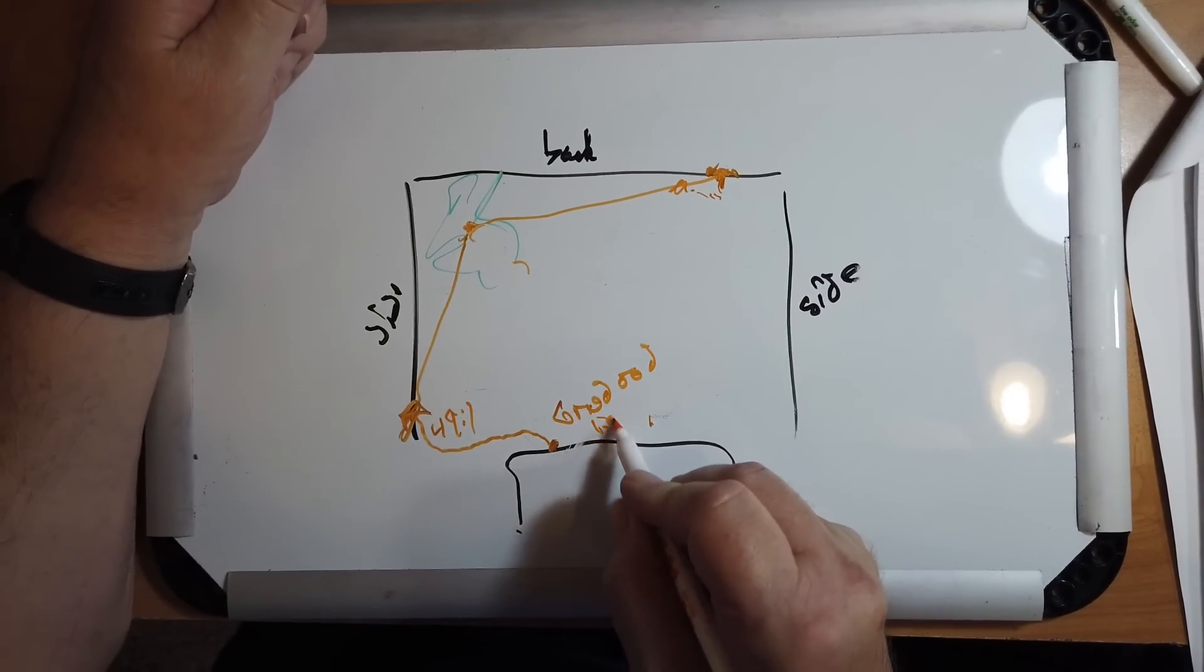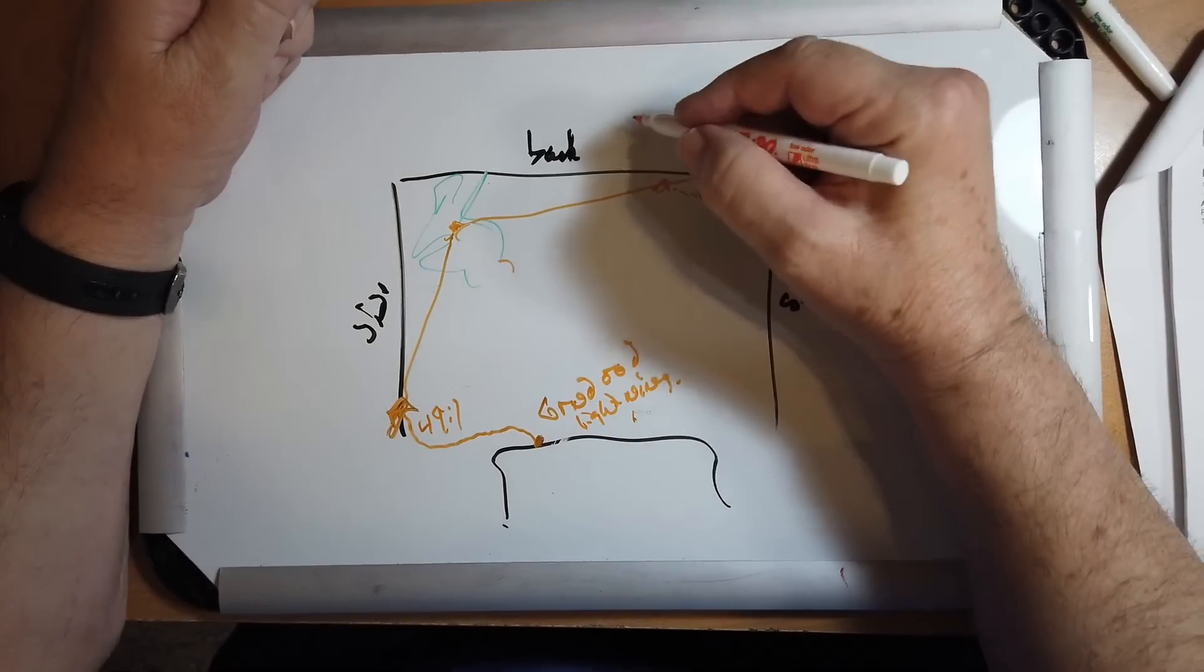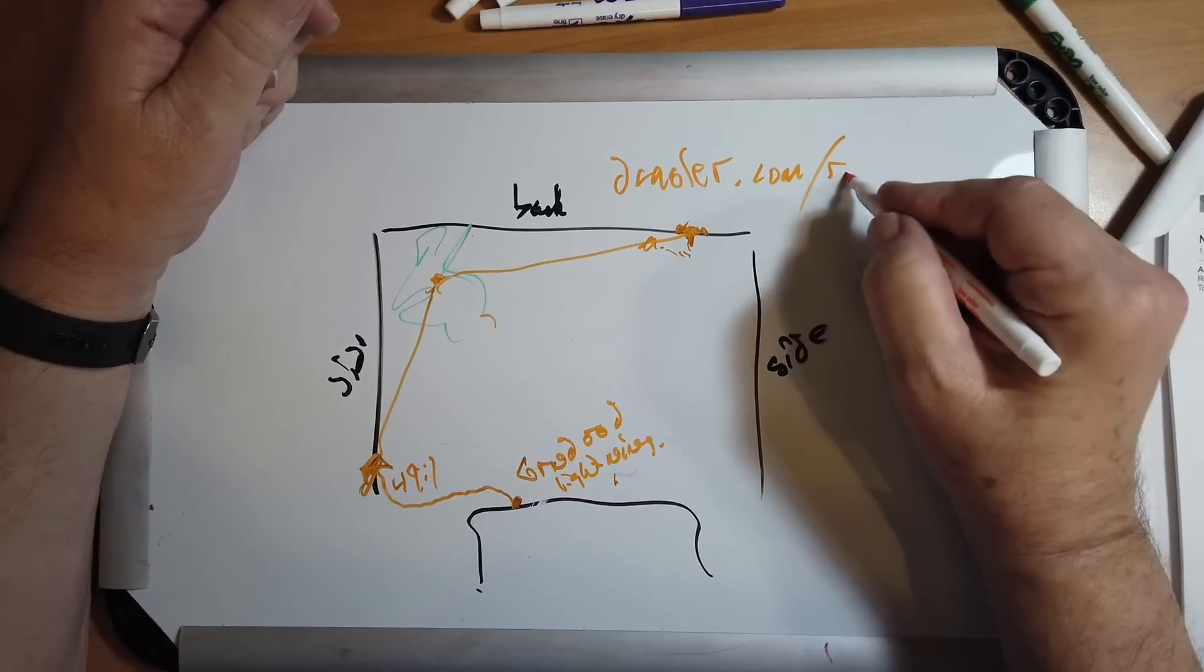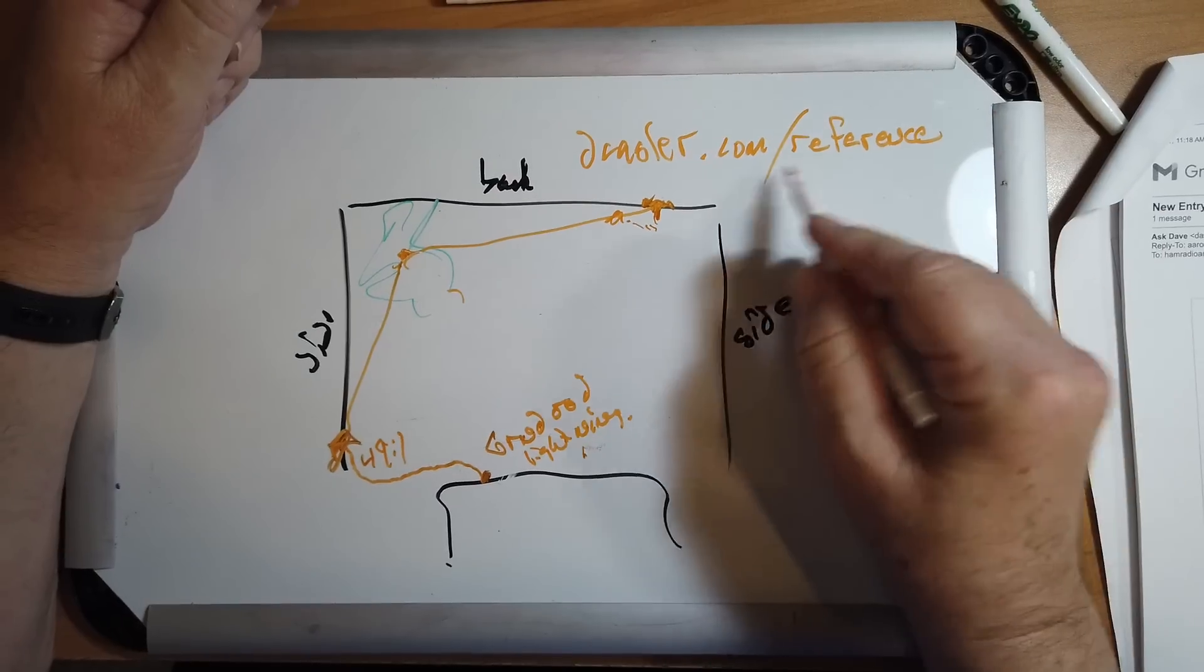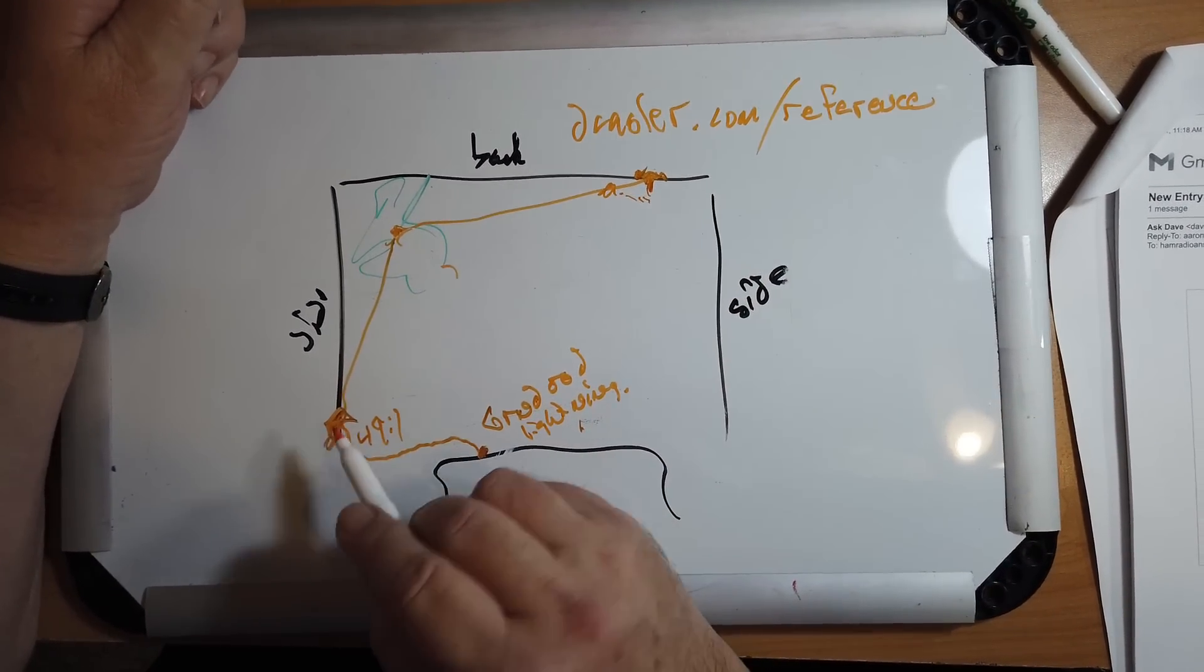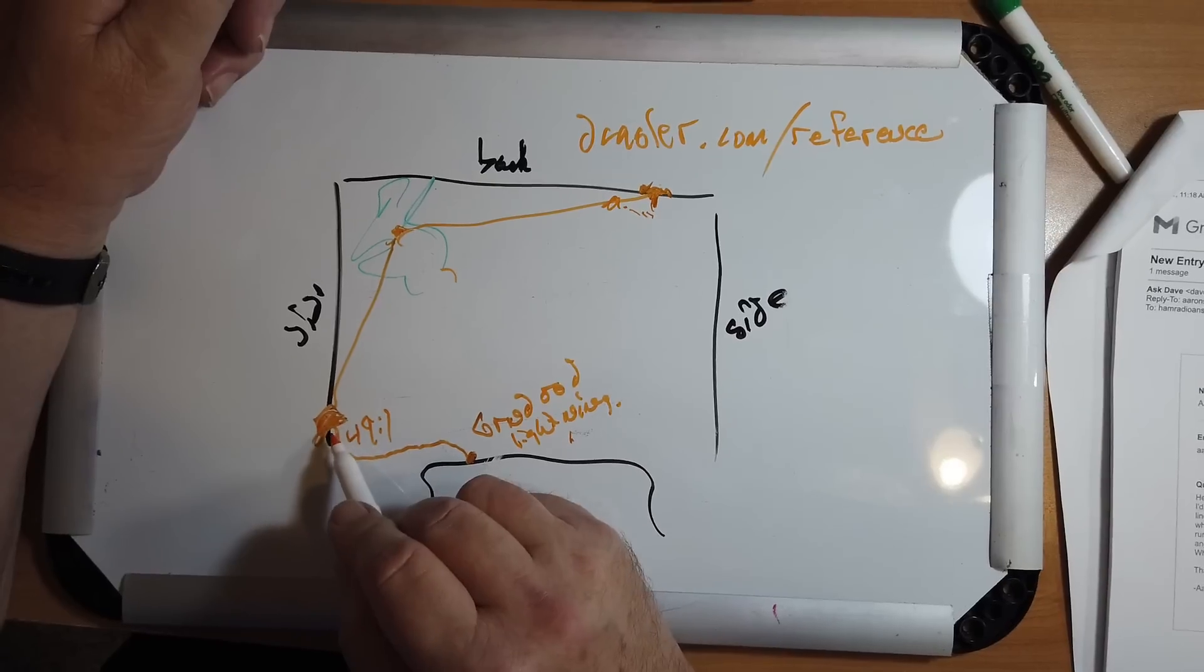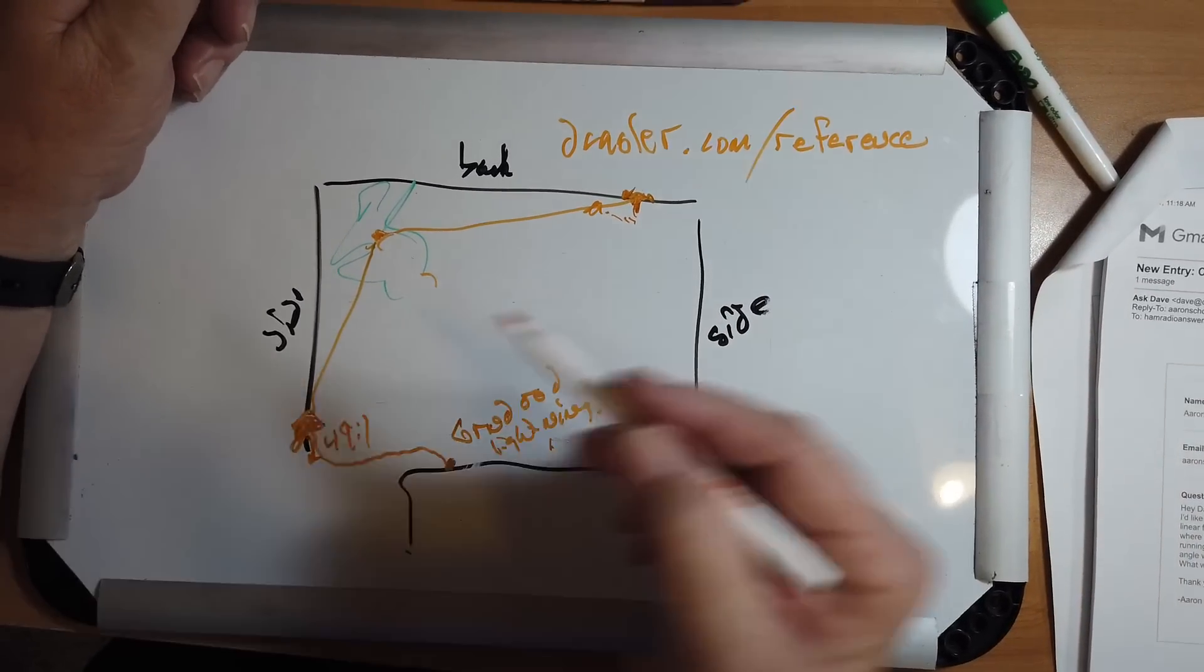And that's where you have your lightning arrestor. And you can look at dcasler.com slash reference to see what the lightning arrestor is I recommend. So you'll attach that there. There is an optional ground connection on the balun, which you could connect to ground here. You can experiment with it either way. You could also just connect it to the fence.